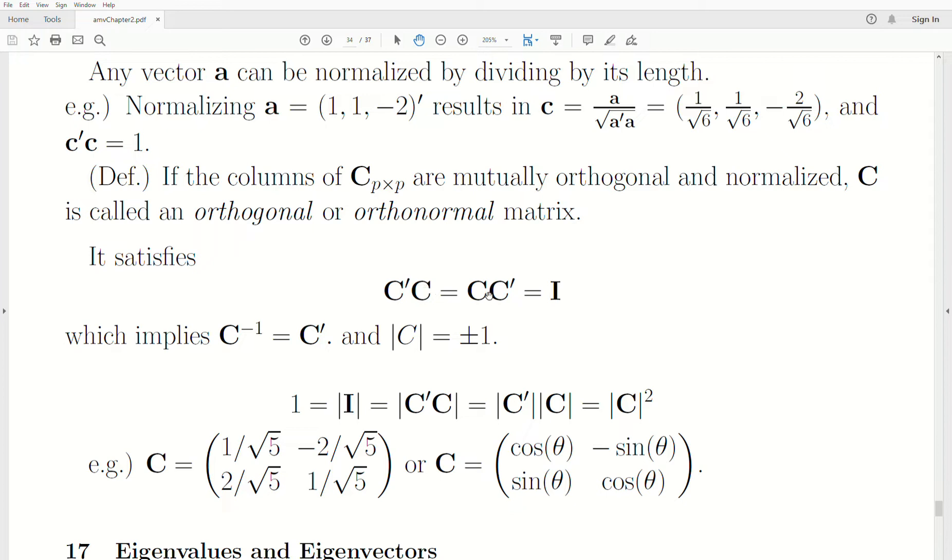Then it satisfies this property: C transpose C equals C C transpose, which is the identity matrix. This implies that C transpose is C inverse, it's the inverse of our matrix C.